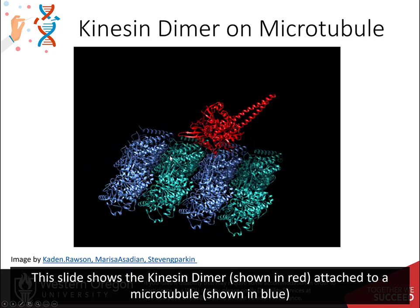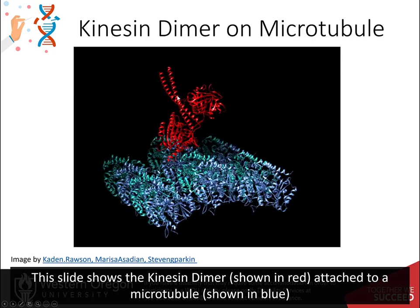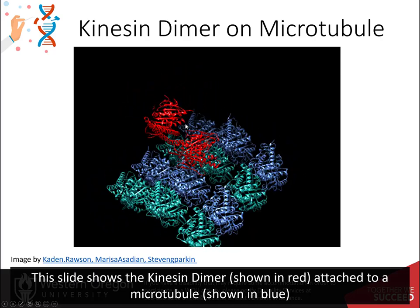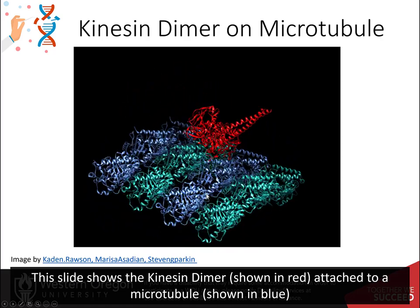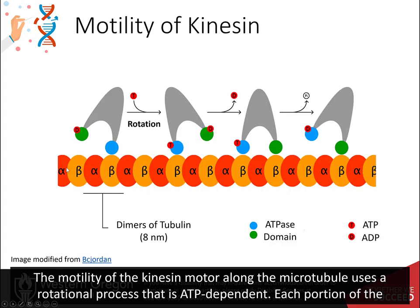This slide shows the kinesin dimer, shown in red, attached to the microtubule, shown in blue. The motility of the kinesin motor along the microtubule uses a rotational process that is ATP dependent.